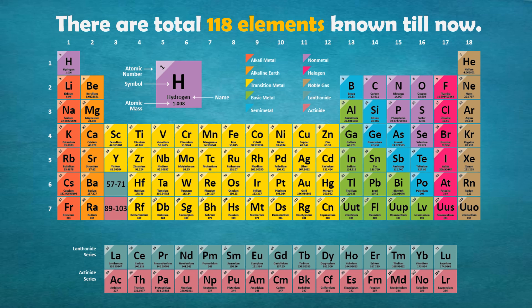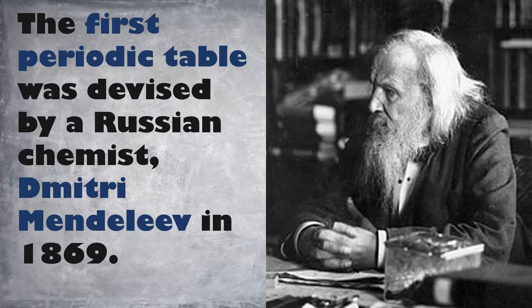Based on their atomic number, these elements have been arranged in a tabular form called the periodic table. The image here shows a modern periodic table. The first periodic table was devised by a Russian chemist named Dmitri Mendeleev in 1869.